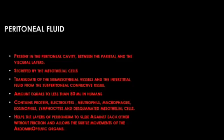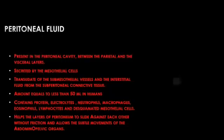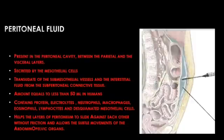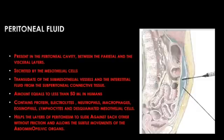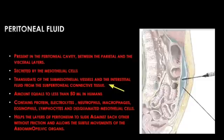Peritoneal fluid: the main function of the mesothelium is to secrete the peritoneal fluid. The lining epithelium of the peritoneal sac — the mesothelium — absorbs fluid from the sub-mesothelial vessels present underneath the mesothelium, and also from the subperitoneal connective tissue. The interstitial fluid from the subperitoneal connective tissue is absorbed by the mesothelium, and this fluid is secreted by the mesothelial cells into the peritoneal cavity.